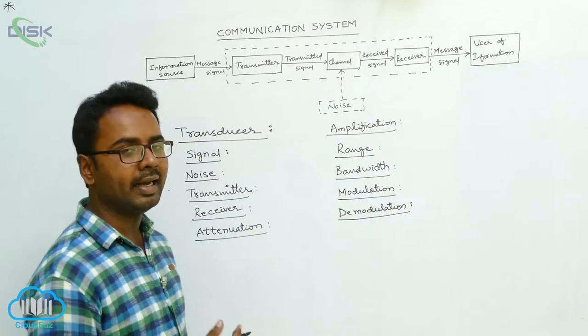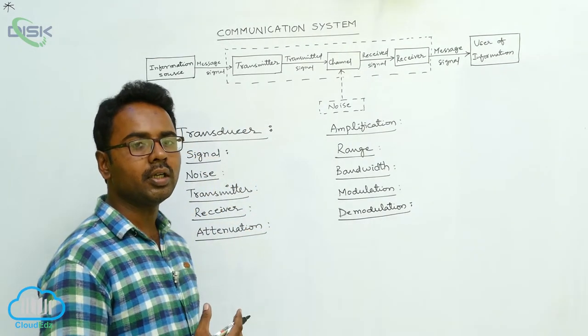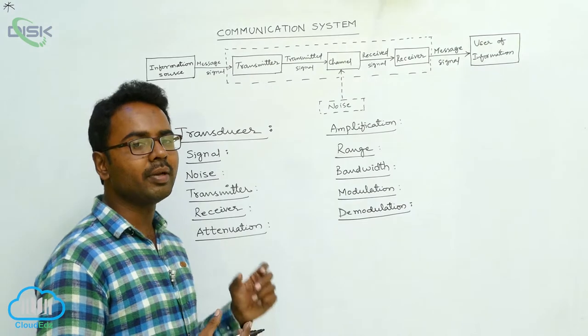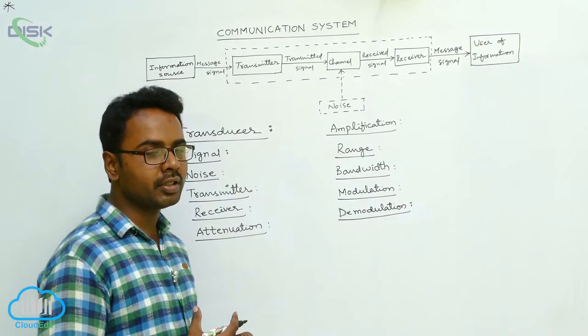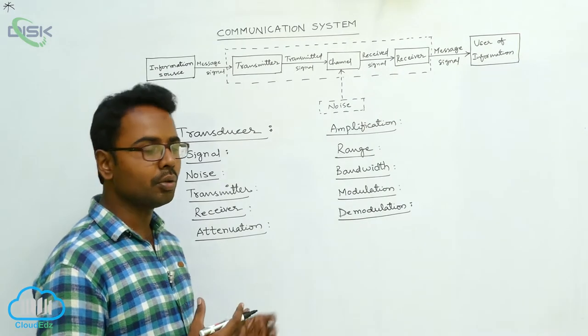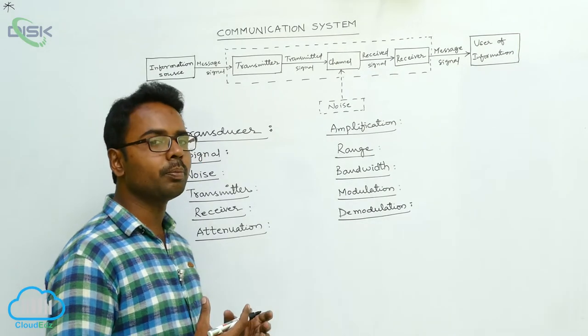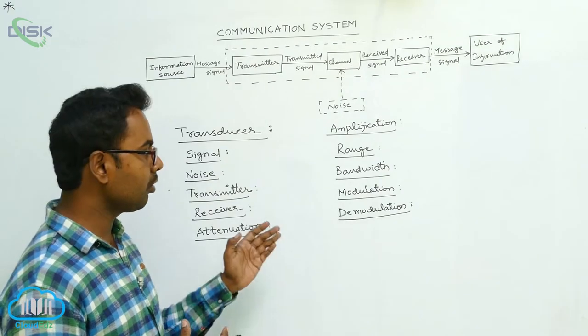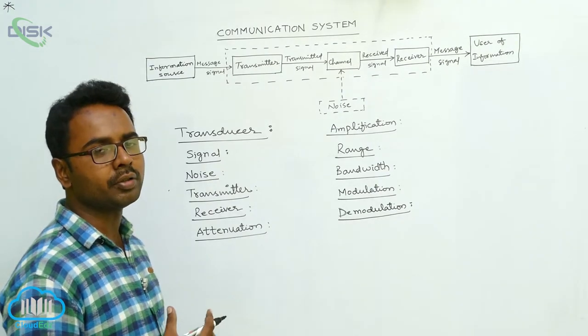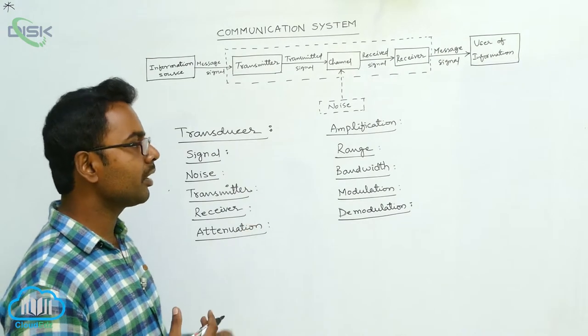At the time of receiving, the receiver should extract the desired message signal only. At the receiver, the carrier signal should be deleted. Demodulation is the process of removing the carrier signal from the message signal. This demodulation is done at the receiver.